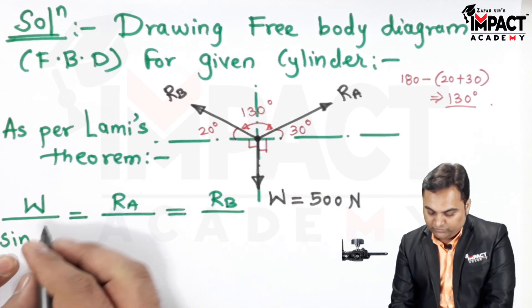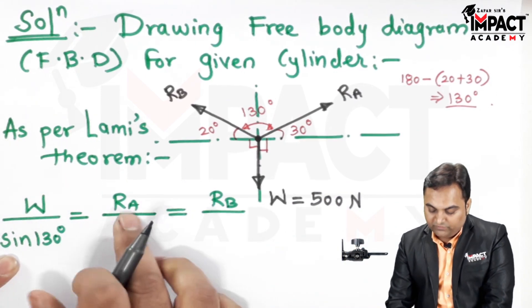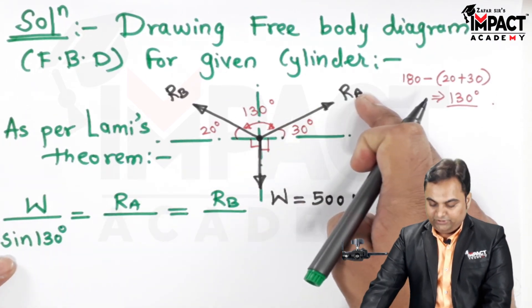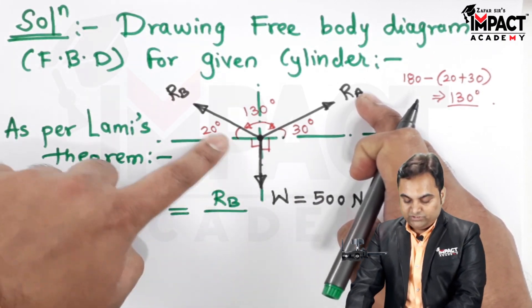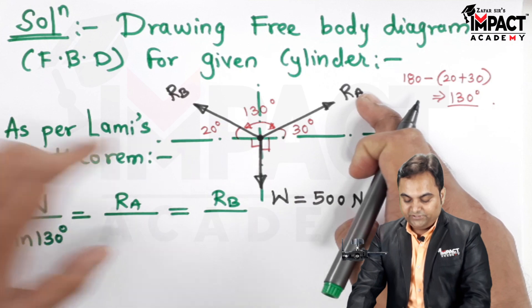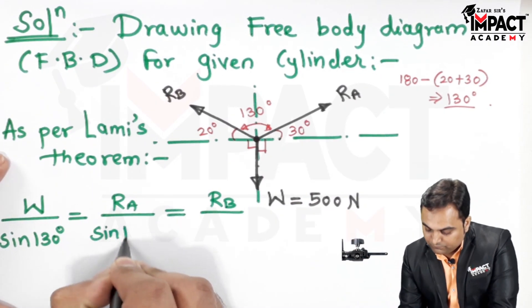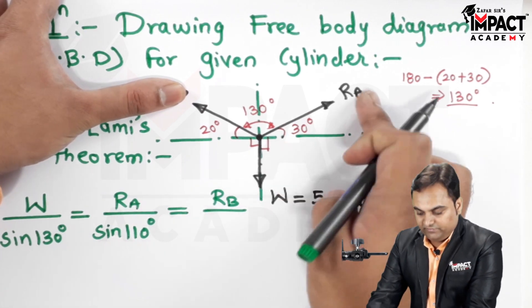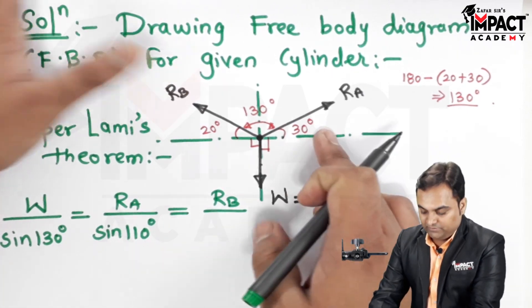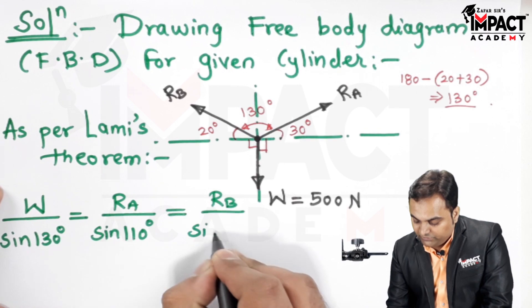Then when we take RA in the denominator, it would be sine of angle between RB and W which is 90 plus 20, that is 110 degree. Then when we take RB, for that sine of angle between RA and W which is 90 plus 30, so sin 120 degree.